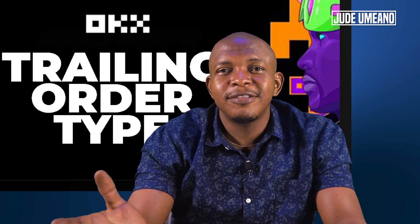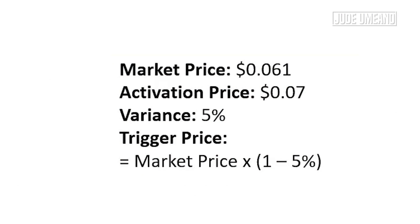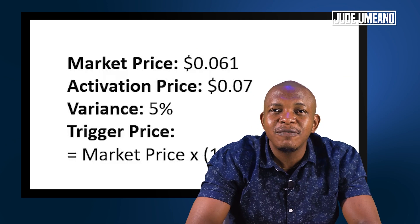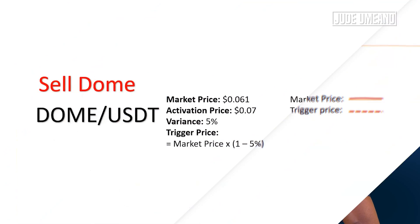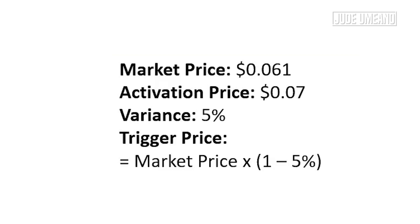Example 2: let's say we bought Dome from the Everdome project — an awesome project. The market price of Dome is $0.061 and we want to sell at $0.07. We could also use the trailing stop order type to sell at a higher price in case Dome gets to $0.07 and keeps going higher. The activation price is $0.07 and the variance is 5%. Variance can be in percentage or amount, and in this case we want to use percentage. The trigger price is market price multiplied by (1 minus 5%).